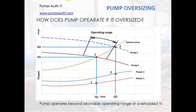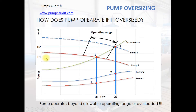Let's look at the graph. For example, the required flow is Q1. The calculated system curve is presented in the graph. In accordance with the system curve for flow Q1, a pump with head H1 is necessary.